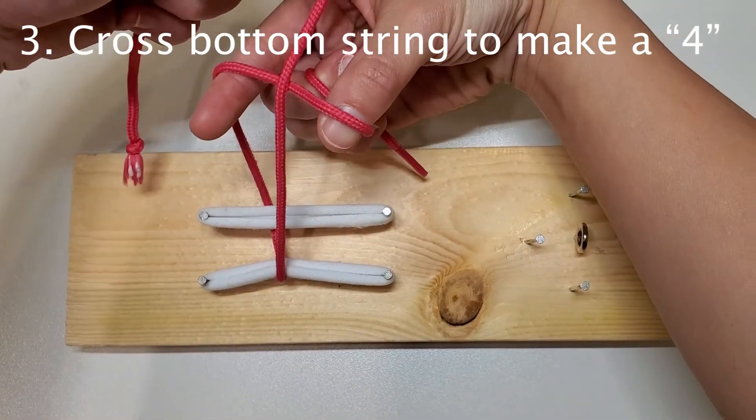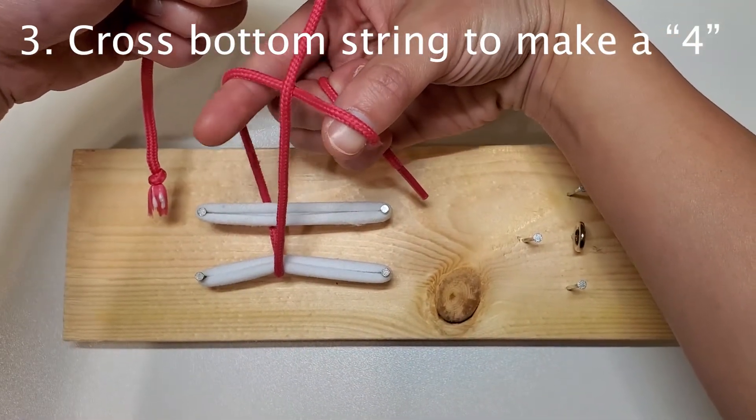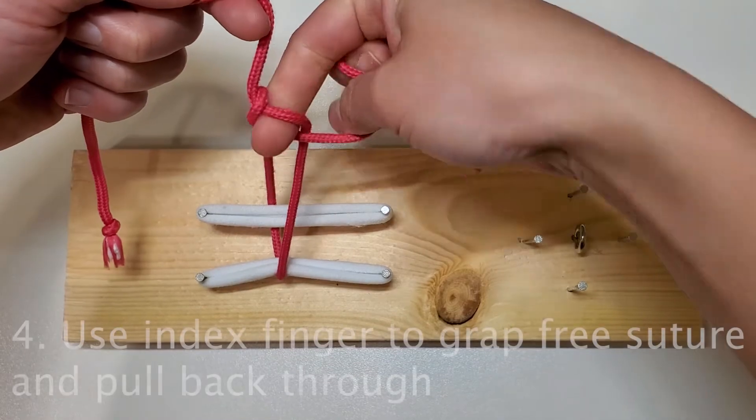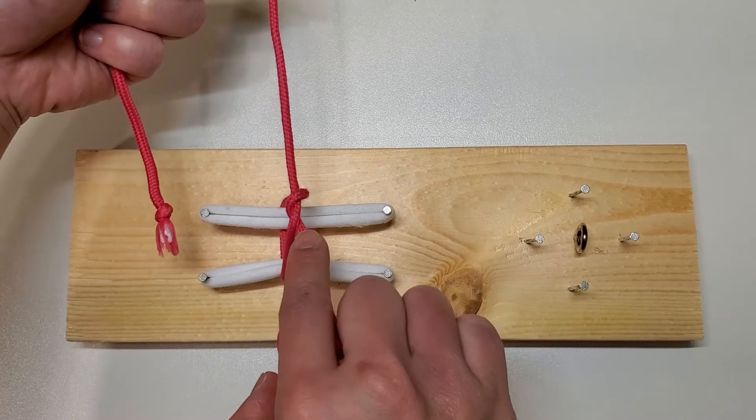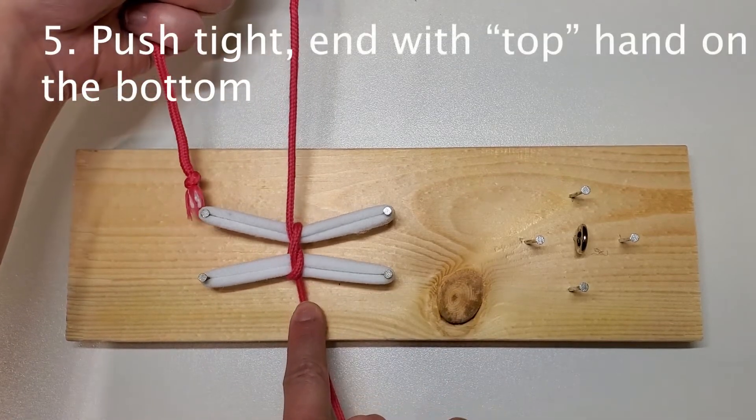You'll make a four or a cross. You'll take your index finger, grab that free suture underneath, take it through the hole, and because we started at the top, we're going to end at the bottom for a square knot.